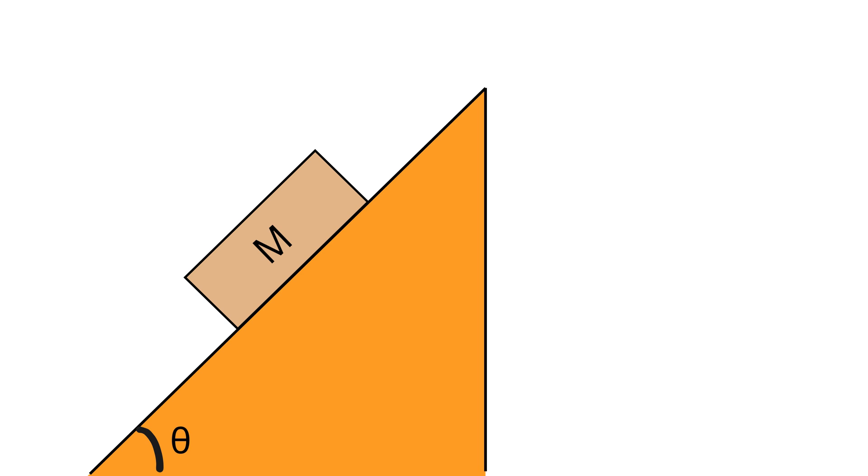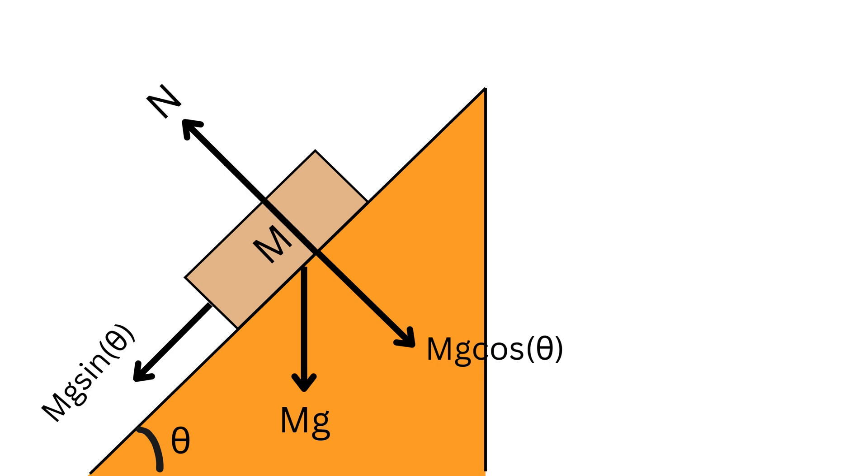Now to solve problems related to the inclined plane with an angle theta using a bit of trigonometry, you should know that the force of gravity can be split into two components: one along the plane, which is mg sin(theta), and one perpendicular to the plane, which is mg cos(theta). So, the normal force acting on a block resting on the plane or moving along the plane only equals mg cos(theta).